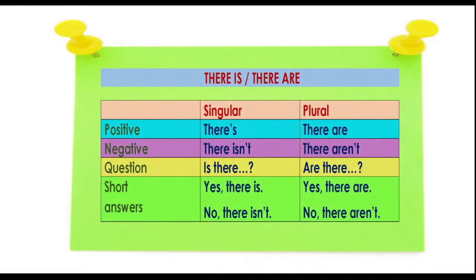Now, the explanation of there is and there are. We have singular and plural. In singular, positive or affirmative, you can say 'there is' or 'there's', and in plural 'there are'. In negative you can say 'there isn't', and in plural 'there aren't'.